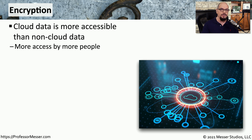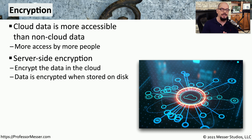By default, data that we store in the cloud is naturally going to be more accessible to others than data that is not stored in the cloud. It is very easy to access these cloud-based storage systems from anywhere in the world. Because of that, we may want to encrypt the data we're storing in the cloud so that there is another layer of security beyond the scope of identity and access management or other permissions that we're assigning to that data.